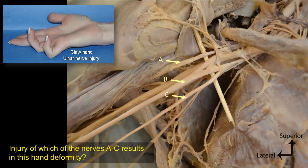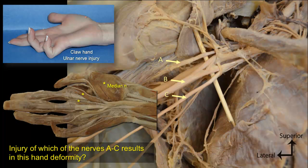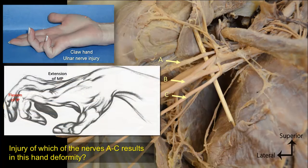The small muscles of the hand are paralyzed, except the thenar muscles and the first two lumbricals, which are supplied by the median nerve. Adduction of the thumb is lost because of paralysis of adductor pollicis, supplied by the ulnar nerve. Paralysis of the interosseous muscles causes extension of the metacarpophalangeal joint and flexion of the interphalangeal joints.